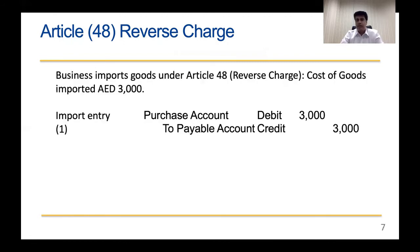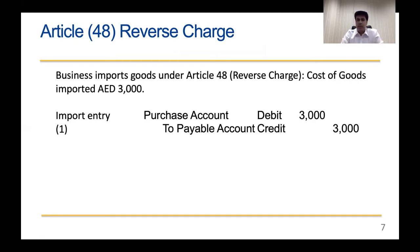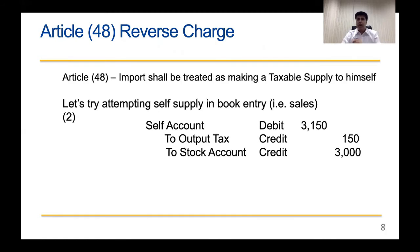Before VAT came into effect, if goods were imported at a cost of 3,000 dirhams, the general import accounting entry would simply be: Purchase account debit and Payable account credit for 3,000 — because you're going to pay the foreign country for the goods imported.